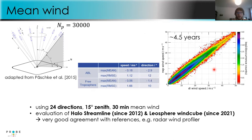As a reference we use the radar wind profiler, which is an operational instrument. There is a very good correlation between the Doppler lidar wind measurements and the radar wind profiler. Comparing over a longer time period, these are in very good agreement looking at the maximum mean difference within both the boundary layer and the free troposphere. This is a data product we can reliably use.